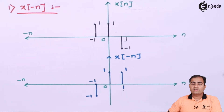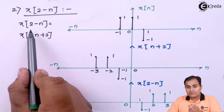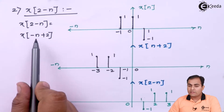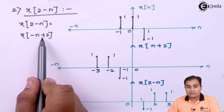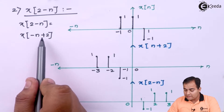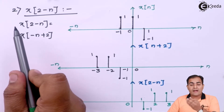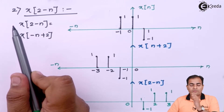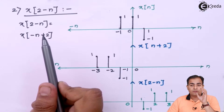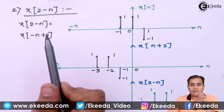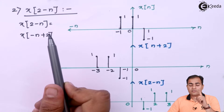Now the second part: x of 2 minus n. We have performed modifications — writing minus n first and 2 afterwards. The plus sign means we perform a time advance operation, shifting the graph towards the left hand side by 2. According to the precedence theorem, we always give first priority to the time shifting property before performing any other operations.